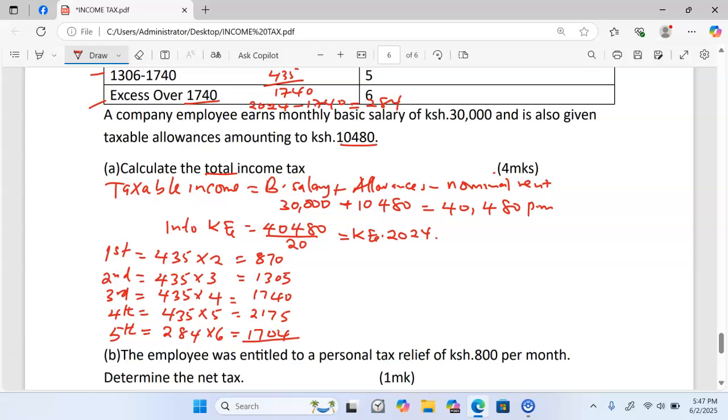Once we have done that, you add all these, and this one is going to give us 7794. Remember the question wants us to calculate total tax, which is the same as gross tax. You get it by adding 870, 1305, 1740, 2175, 1704, which is going to give us an amount equivalent to shillings 7794. That is the answer to part A.